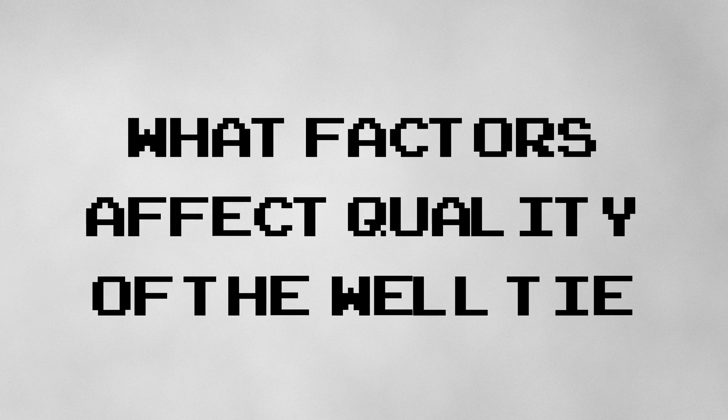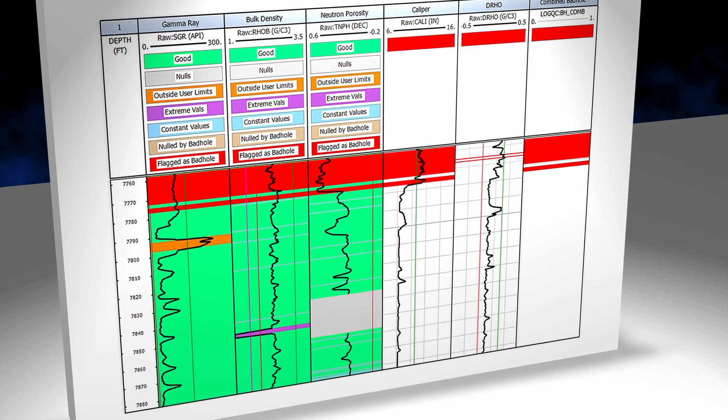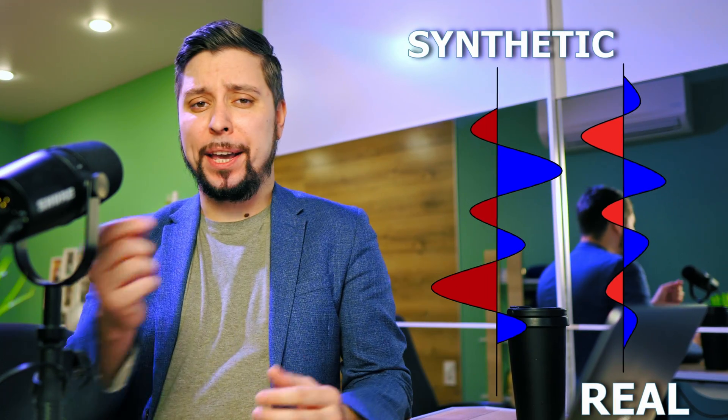Now let's consider what factors might affect the quality of the tie. It is critical to examine the quality of logs used to generate synthetic seismograms, because any non-geological spikes in velocity or density can cause incorrect events or impact the amplitudes in the synthetic seismic. The seismic must also be checked for quality. The synthetic seismic cannot be expected to match the real data if it is affected by residual multiples or has a lower signal-to-noise ratio. There are also pitfalls associated with the phase timing ambiguity problem — the data might be tied reasonably well with wavelets of various phases and timings, which is not correct.